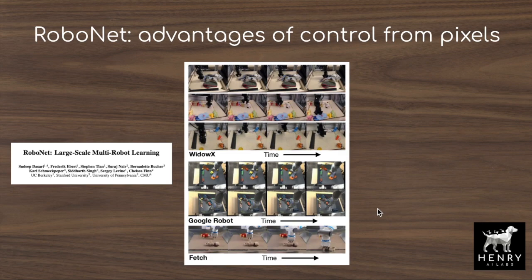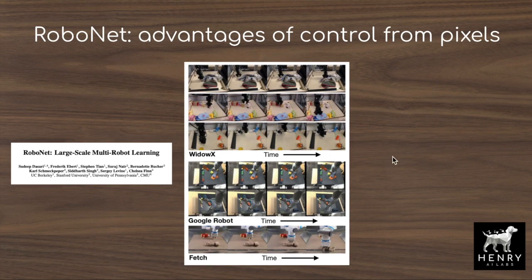Another interesting area is the RoboNet dataset, containing around 15 million sequences of robots performing tasks like picking up a ball, stacking blocks, and various manipulation tasks. As we move towards pixel-based control like CURL, it will be interesting to see transfer learning from these massive viewpoint control datasets to fine-tune for real-world robotic control tasks.